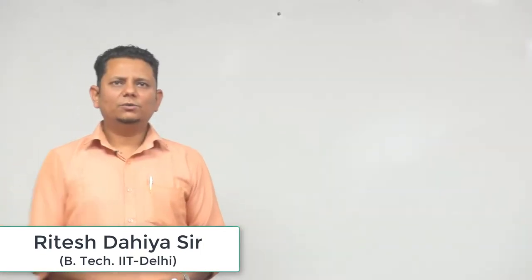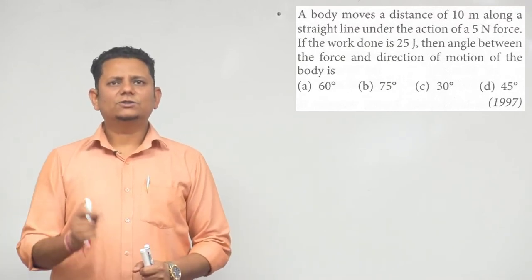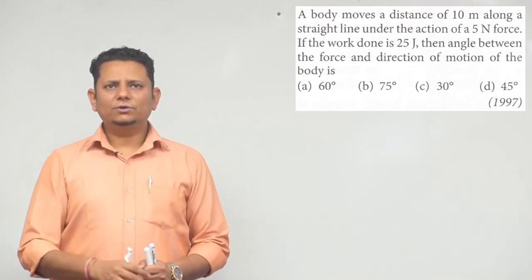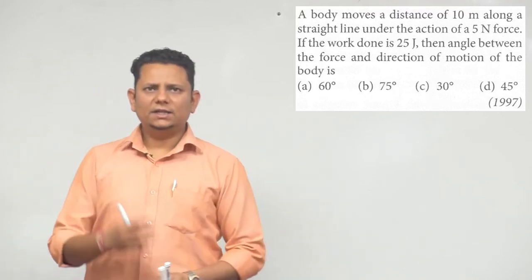Next question: A body moves a distance of 10 meters along a straight line under the action of a 5 Newton force. If the work done is 25 Joules, then the angle between force and the direction of motion of the body will be: 60 degrees, 75 degrees, or 30 degrees.